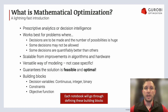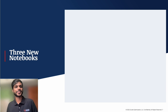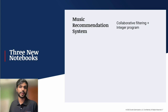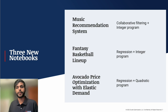That's it for me for now — I'm going to throw it over to Rahul to talk about the three notebooks we're going to cover. Thank you, Jerry, for that wonderful introduction to mathematical optimization. In this part of the webinar, we'll be looking at three new notebooks added to the Gurobi data science library. The first example is a music recommendation system that combines collaborative filtering and an integer program. Next, we'll see how to select an optimal basketball lineup using regression and integer programs. Finally, we'll see how to set optimal avocado prices using regression and a quadratic program.